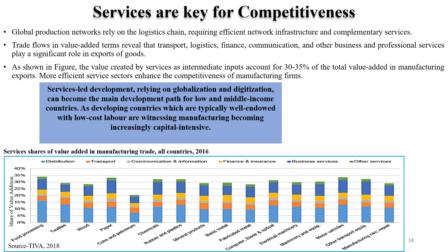Product-wise, more than 30 percent is the share of value addition by some of the major services like distribution, transport, communication and information, finance, and business services. Distribution contributes a significant portion across all products. Distribution services include warehousing, retail, and connecting to retail, generating large employment. Technologies for quality controls and many other things are connected, so investment in those areas is necessary to improve performance in global value chain.